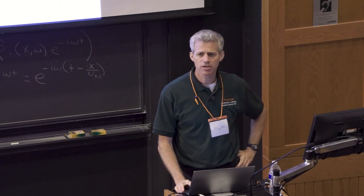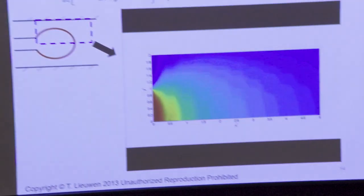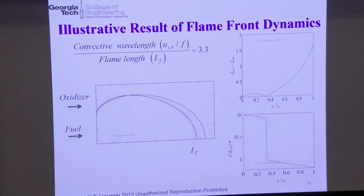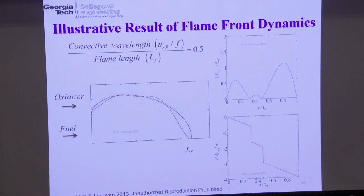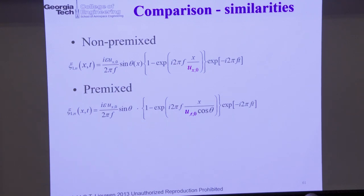I have some analysis of non-premixed flames to blitz through. There are lots of similarities between premixed and non-premixed flames in terms of their space-time dynamics. The key difference is that premixed flames propagate, so the speed with which wrinkles move along the flame is a little different. In non-premixed flames, wrinkles move along the flame at the flow speed. In premixed flames, wrinkles move at the vector superposition of the flow speed and the flame speed normal to itself.